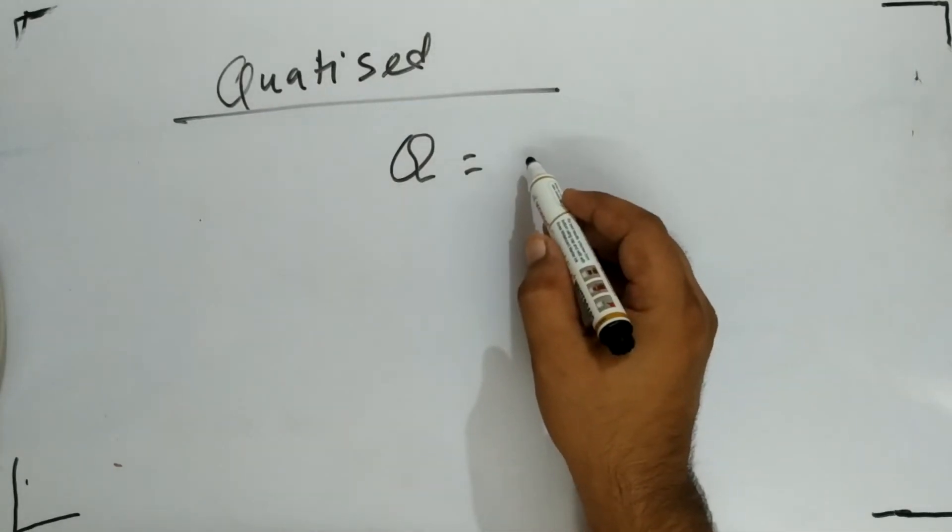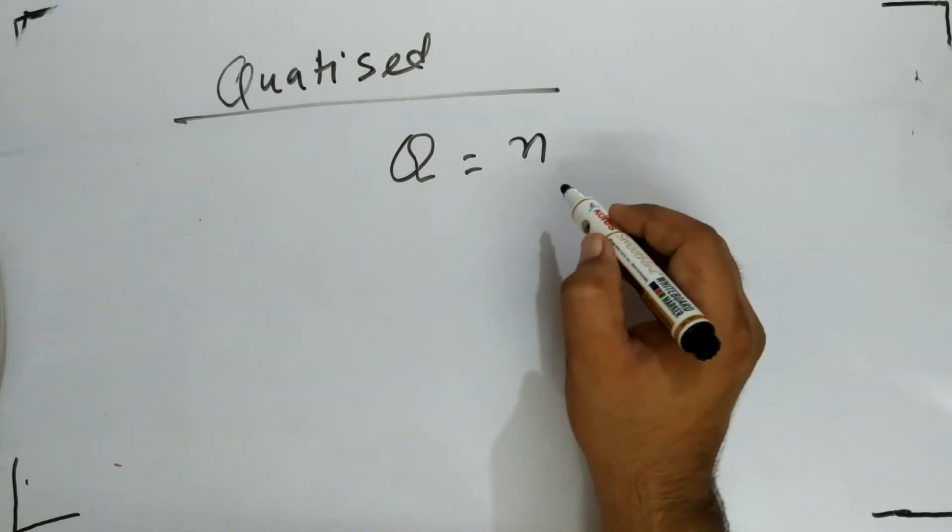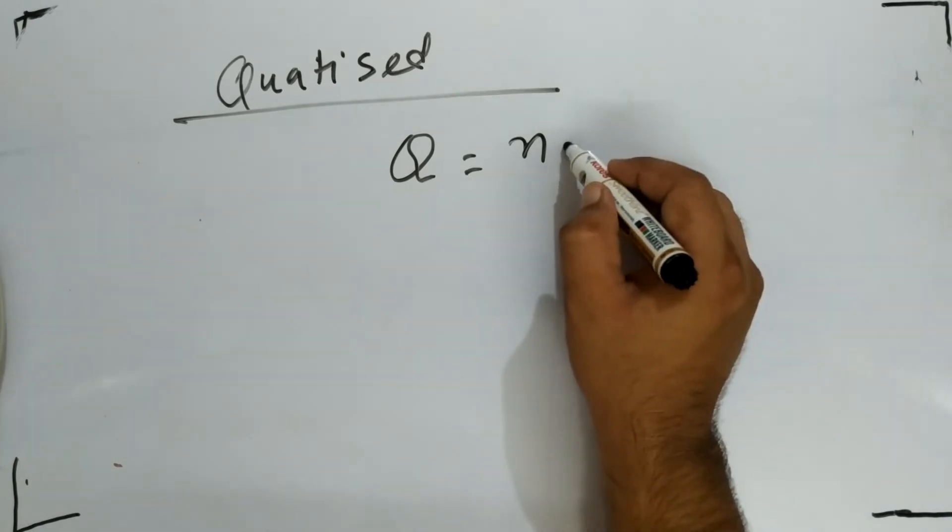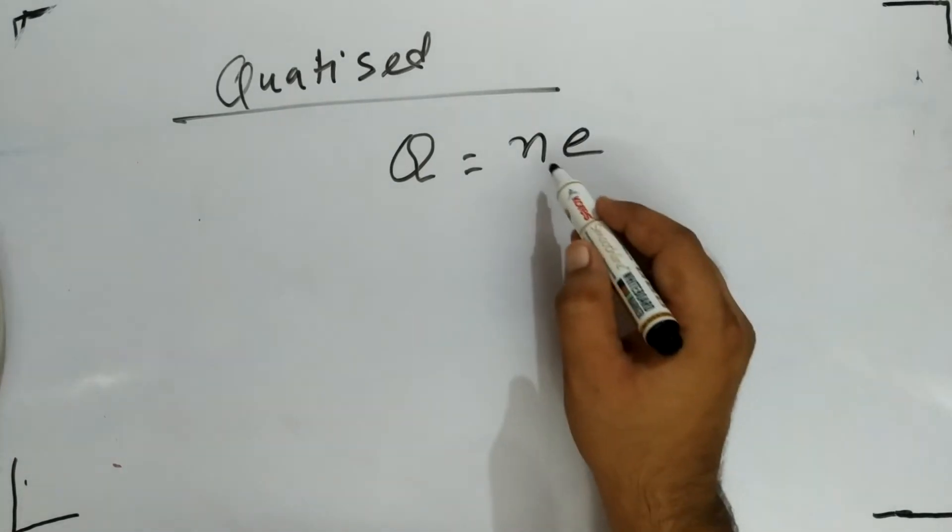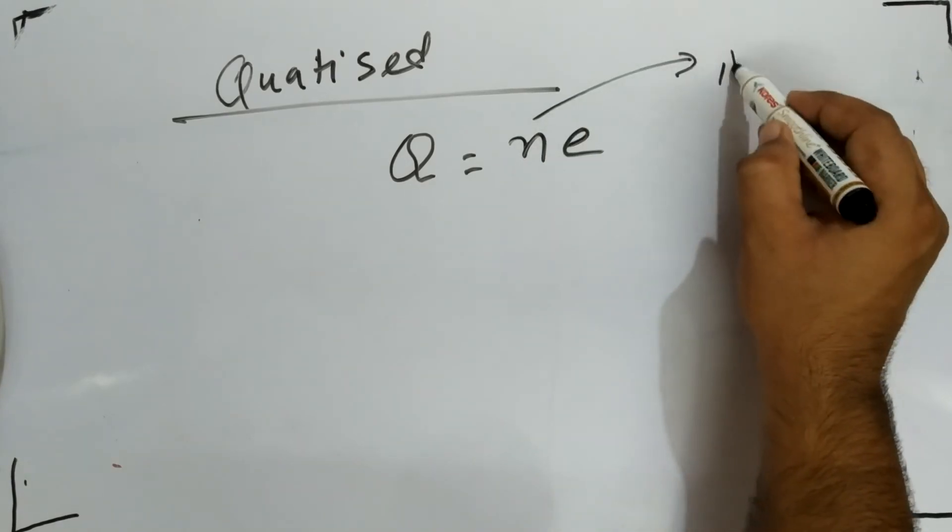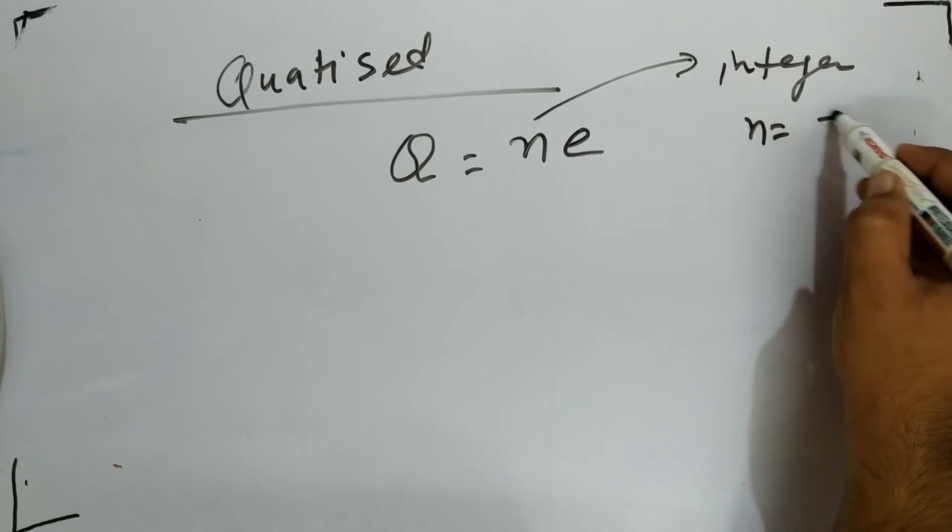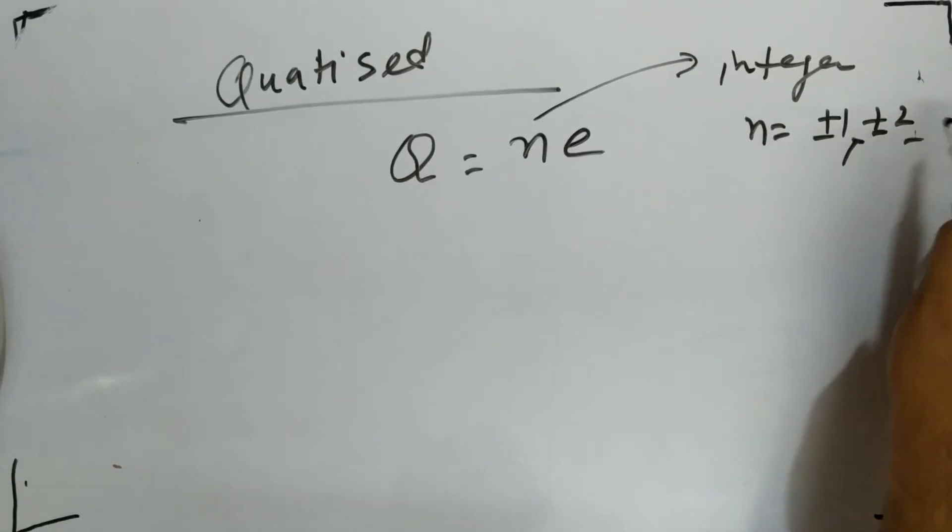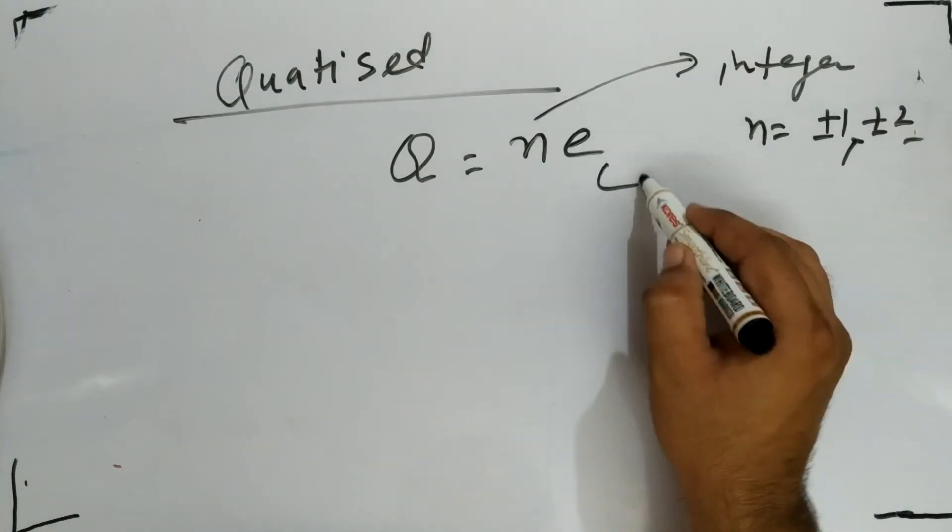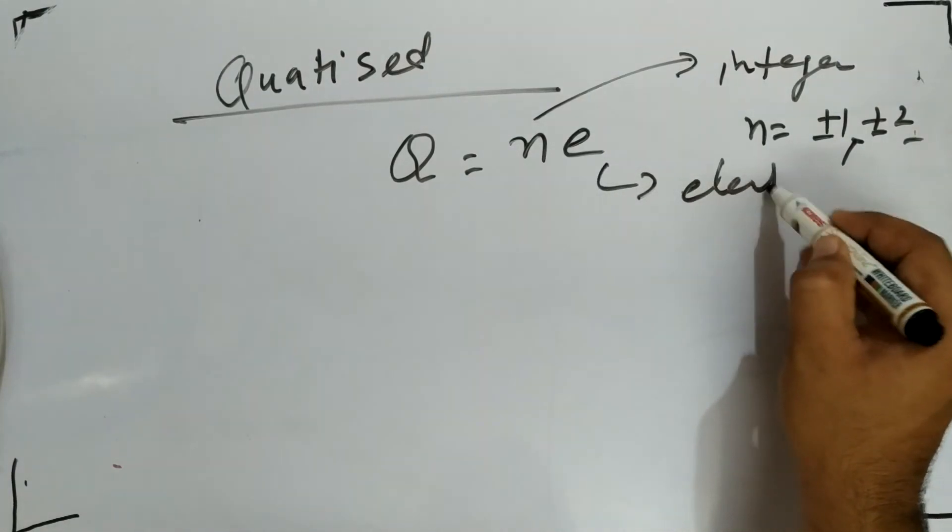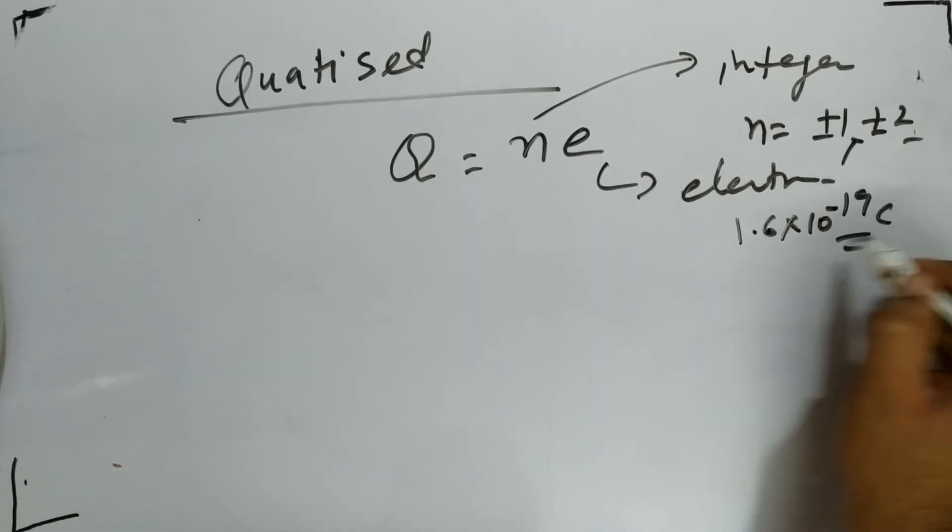Quantized, meaning total charge Q must be equal to the integral multiple of charge on electron. Q equals to nE. N is an integer. N value can be plus minus 1, plus minus 2, plus minus 3, and so on. What is this small e? This is charge on electron, and charge on electron is 1.6 into 10 to the power minus 19 coulomb.